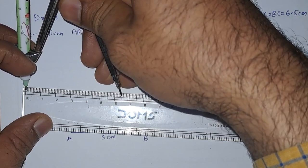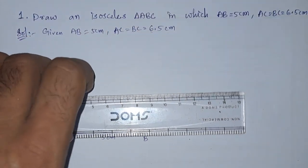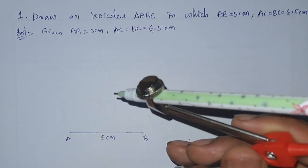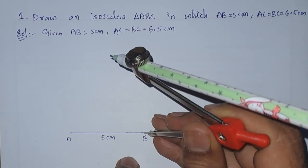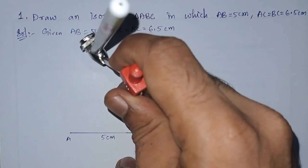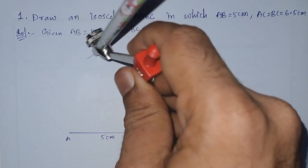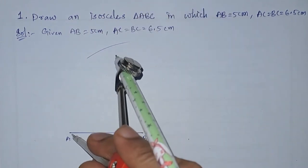So you can see this is 6.5. I am using pen, but I want you to use pencil. To make it visible in the video, I am using pen. Now let us draw an arc here from A.